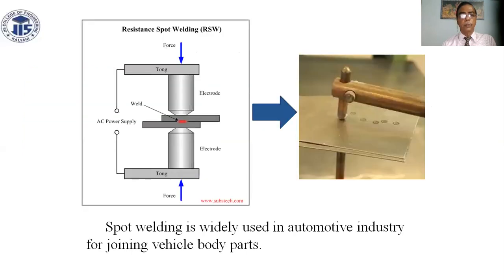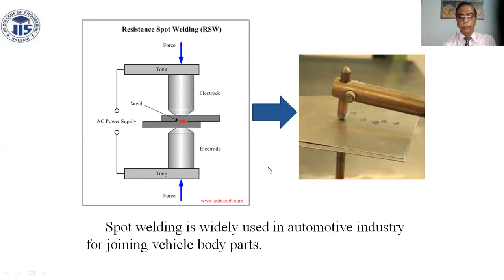This is an actual spot welding machine showing the electrode, weld nugget, power supply, and machine electrode. Spot welding is widely used in the automotive industry for joining vehicle body parts.